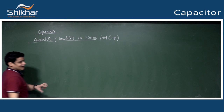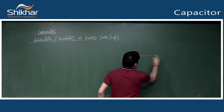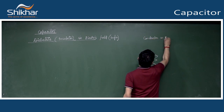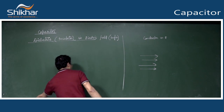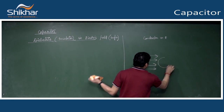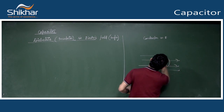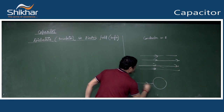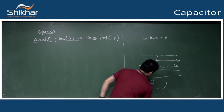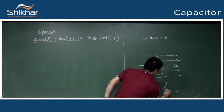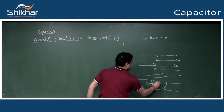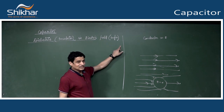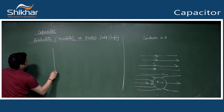We have already discussed conductor in electric field - this is the electrostatic shielding case. When a conductor is placed in an electric field, the field gets modified around it and inside the conductor, electric field becomes zero. But for dielectric in electric field, inside the field is not zero - it only reduces.